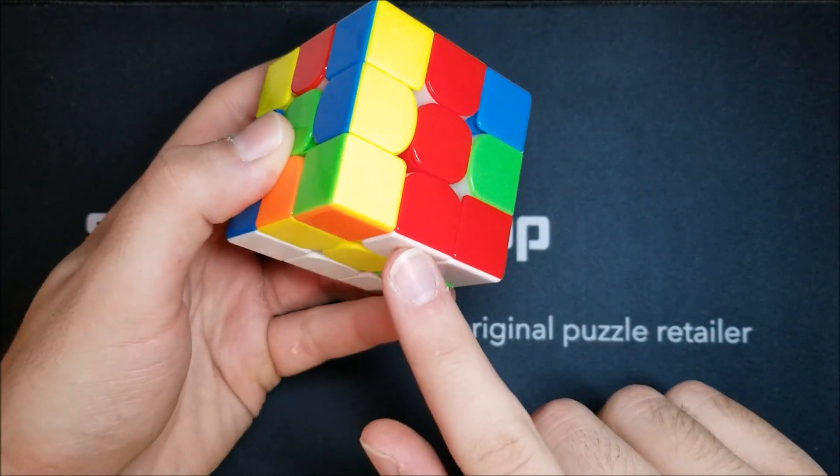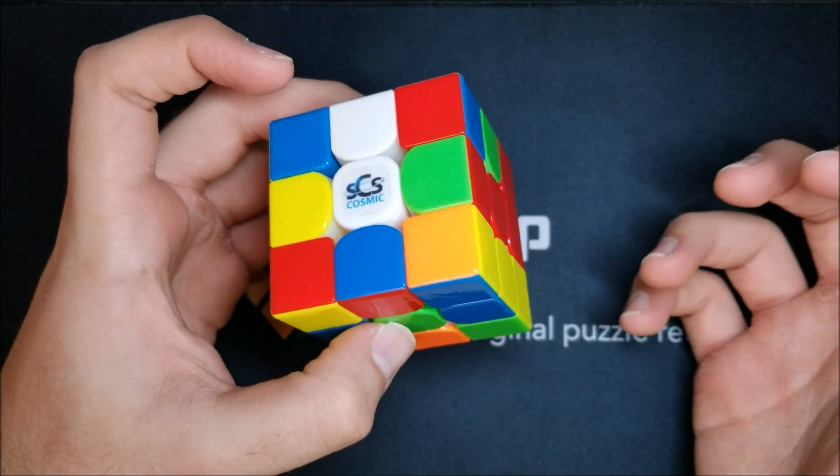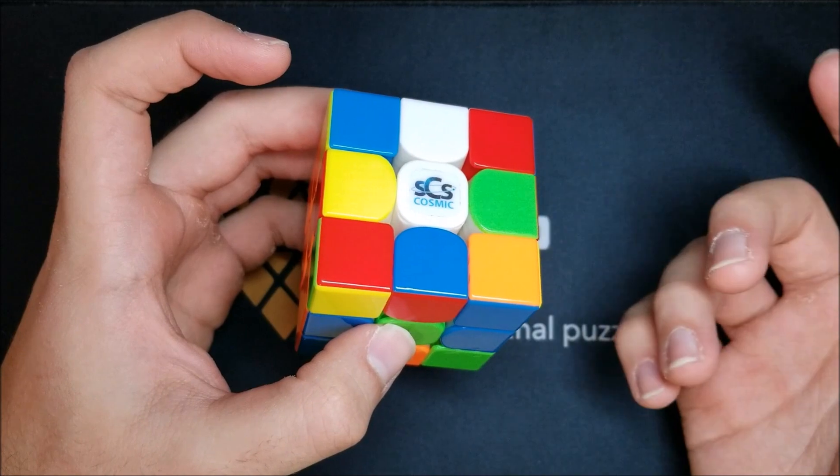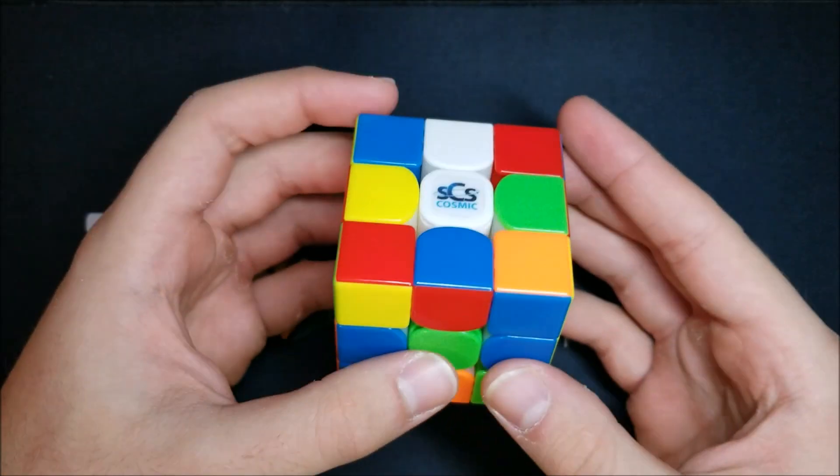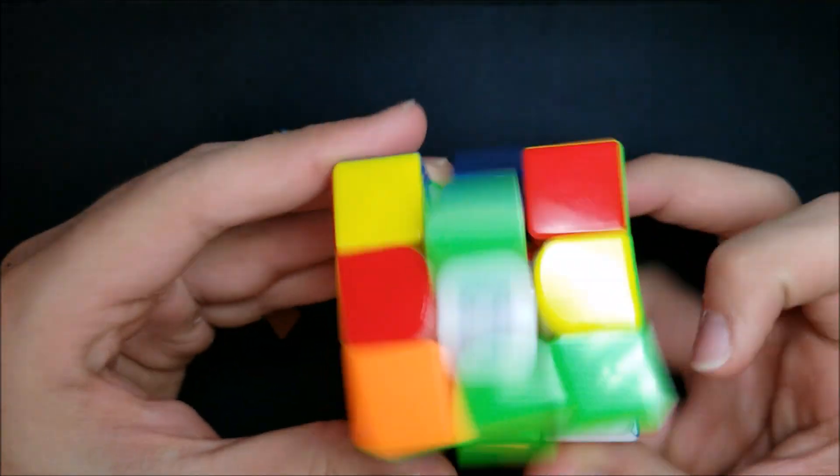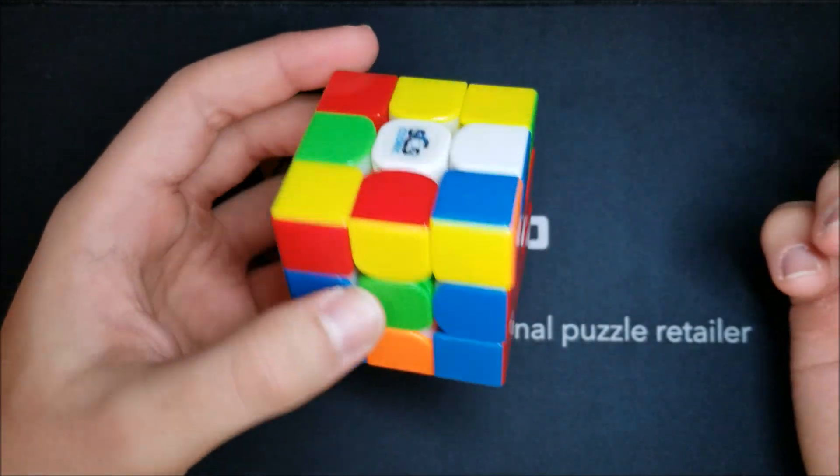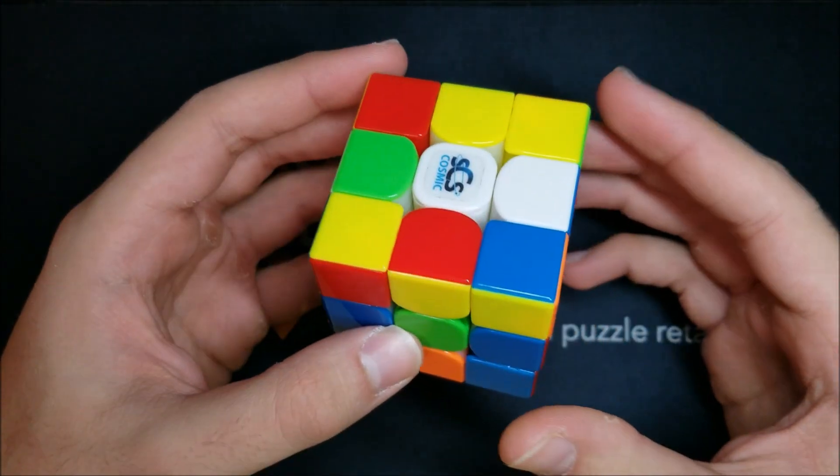And basically what this will allow you to do is if you can do first block plus DR blind and you can do all of second block blind, then you'll essentially be able to solve your whole first two blocks only doing one look in your actual solve. So this makes look ahead really easy and you'll be able to turn really fast.